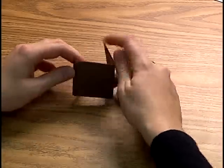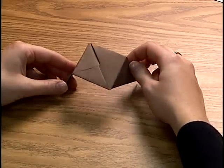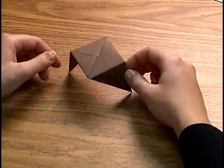Now this is your basic Senobe unit. This can be used to fold the cube, the bird tetrahedron, the 24-sided figure, and the stellated icosahedron.